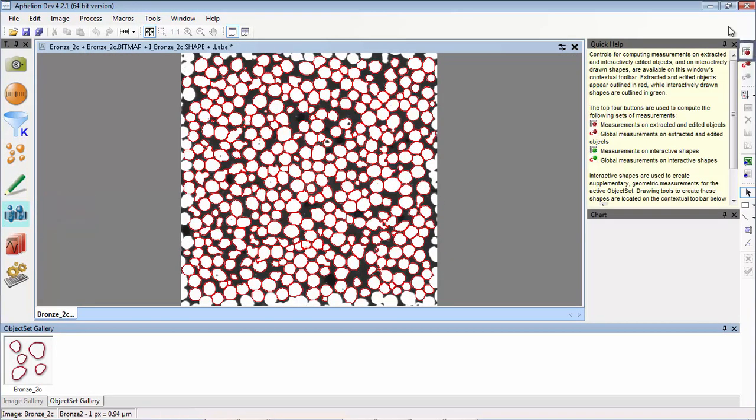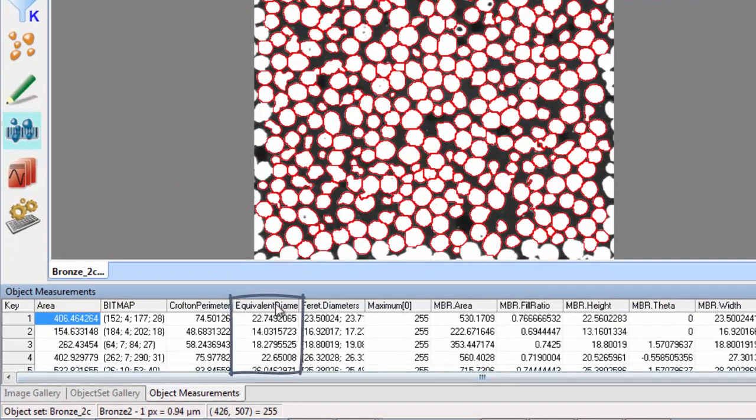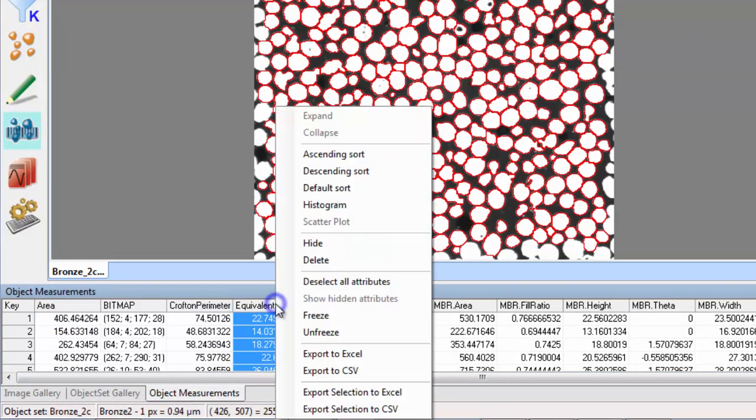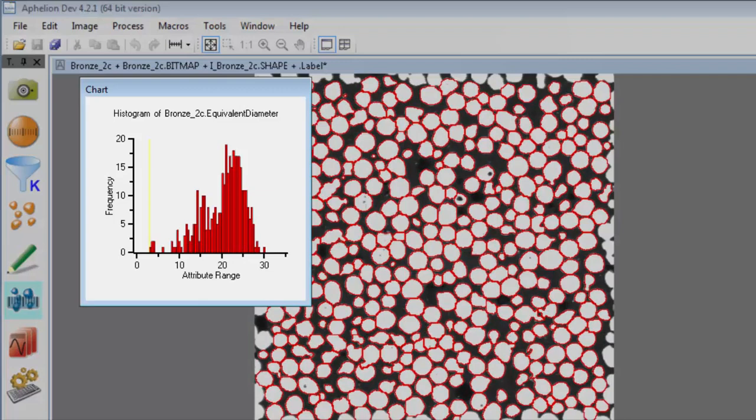We then measure many different properties of the objects to produce a table of results that we can use to examine a specific property, such as the particle diameter. We can then also view that result in graphical form.